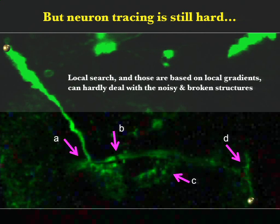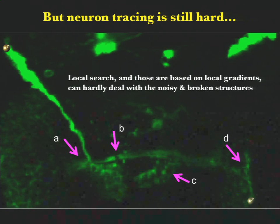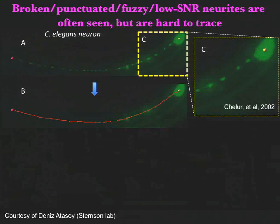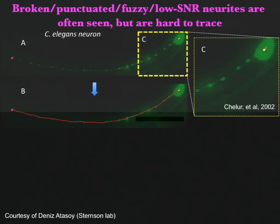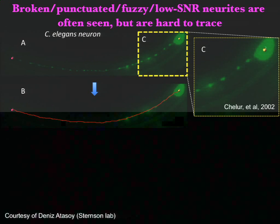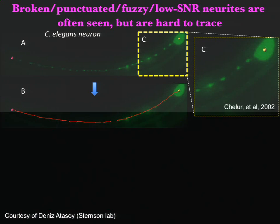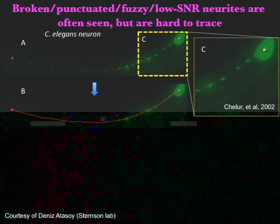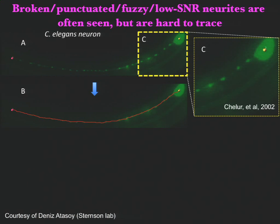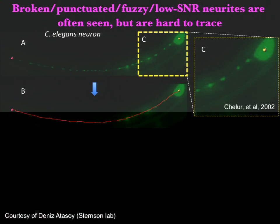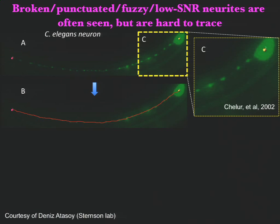You could blame this problem on the image's quality, but there are some problems you cannot avoid. Intrinsically, a lot of times the neuron structure has a lot of punta. Axon-long vesicles actually get enlarged there. If you want to trace the broad side and also along the axon, you will notice that the part that connects them is very dim. This is biological, and you cannot avoid that.